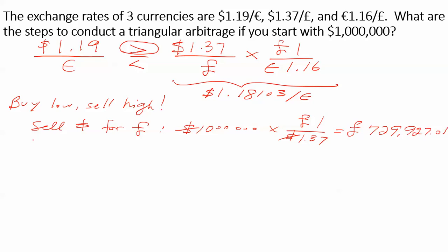Next, now that we have pounds in our hands, we're going to exchange it for the next currency. And we see that the next currency we can exchange it for is euros. So now convert to euros using the exchange rate of pounds for euros. Making sure again that euros is in the numerator and pounds are in the denominator because we need the pounds to cancel out, giving us 846,715.33 euros.